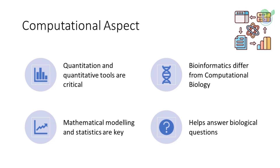Bioinformatics however differs from a related field known as computational biology. Computational biology encompasses all biological areas that involve computation — for example, mathematical modeling of ecosystems, population dynamics, application of game theory in behavioral studies, and phylogenetic construction using fossil records — all employ computational tools but do not necessarily involve biological macromolecules.